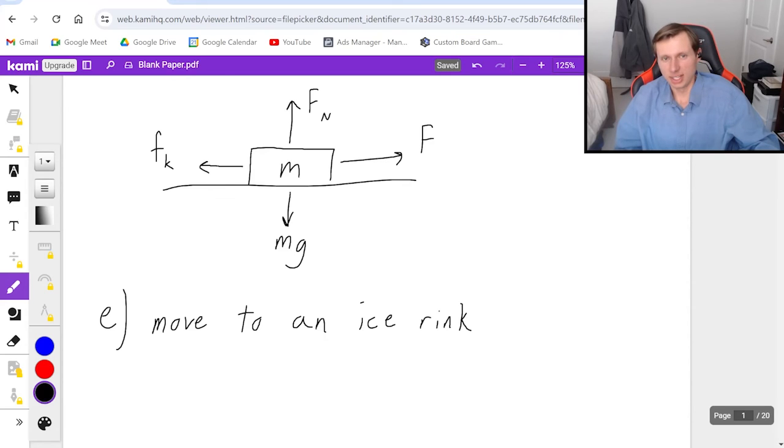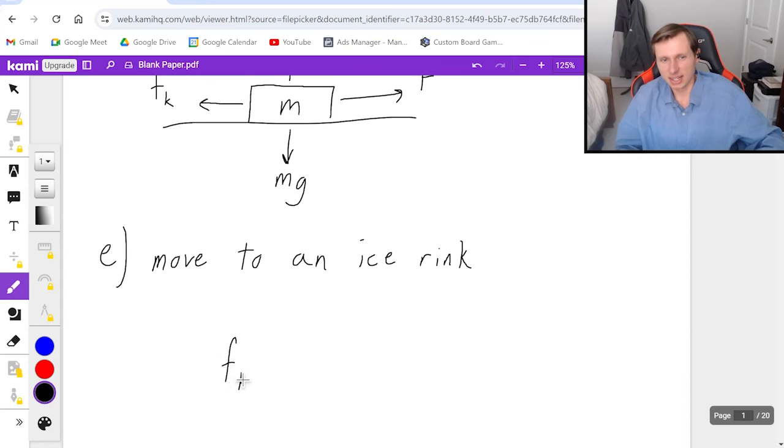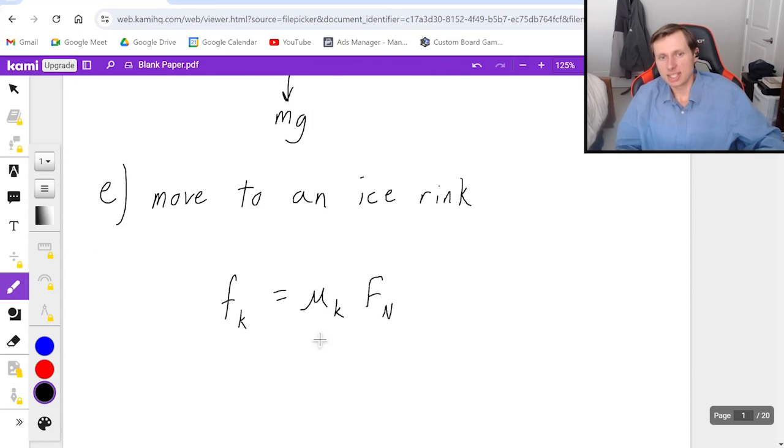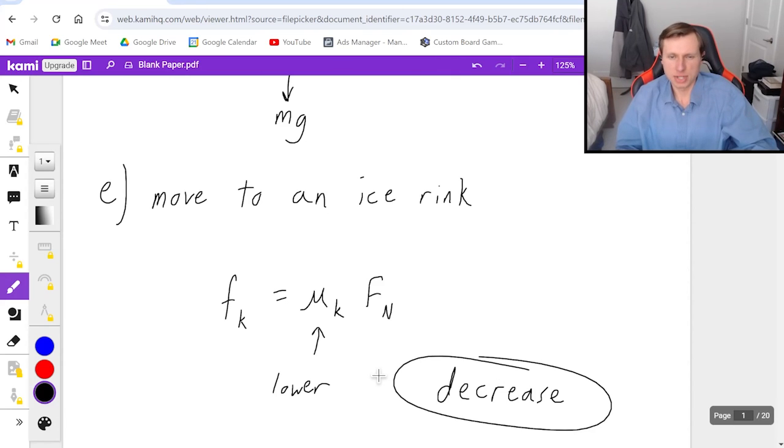And so here's the answer. The answer is, when I move it to an ice rink, again, same equation, mu k times the normal force. Ice has a lower coefficient of friction, which means my overall friction is going to go down, it decreases. And that was the most obvious one of all.